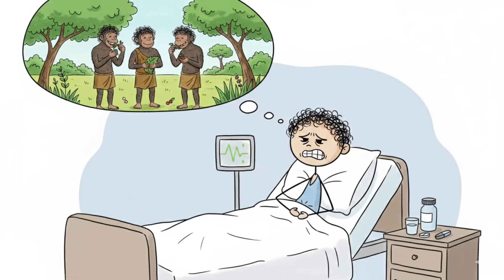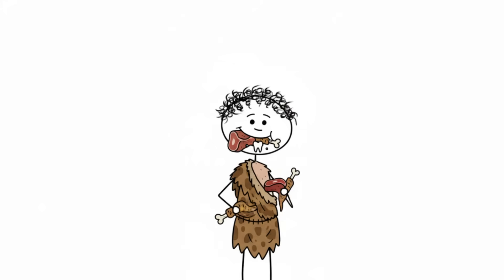For most of history, sodium was incredibly scarce. Early human diets heavy on foraged plants and lean game provided barely enough sodium to maintain essential nerve and muscle function.